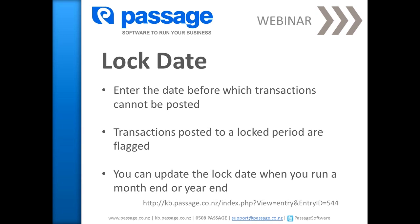If a user has full access to every part of the software, then on upgrade they will have the ability to override the lock date. If a user only has partial access on upgrade, then initially they will not be able to override the lock date. To grant a user access to override the lock date, log in as manager, go to Settings, Access Rights, select the user from the list and go to Details. Select the Settings menu and then Dialogues. Select Lock Date Settings, Full Access, OK, Close and Close.